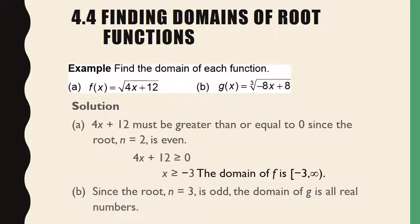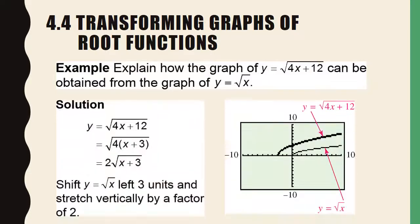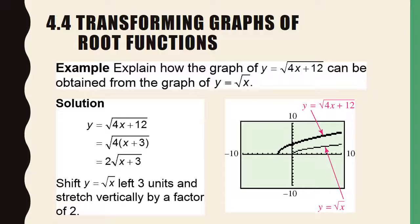Now think back to Chapter 1 and explain how the graph of y equals the square root of 4x plus 12 can be obtained from the graph of y equals the square root of x. We can factor out the 4 — take the square root of 4, you get 2 — so you have 2 times the square root of x plus 3. That means this is going to be a vertical stretch of 2 and a shift left 3 units.